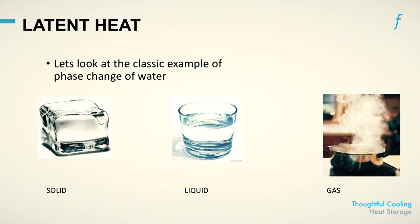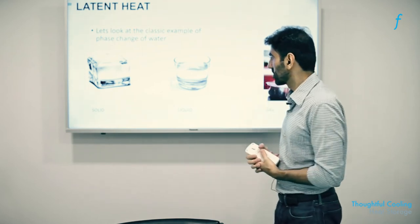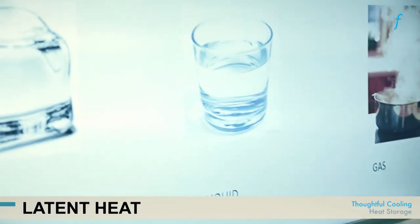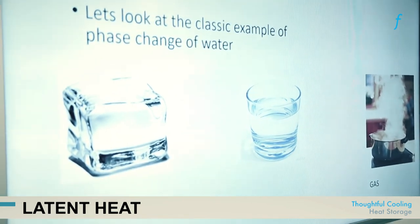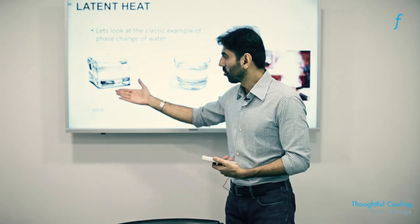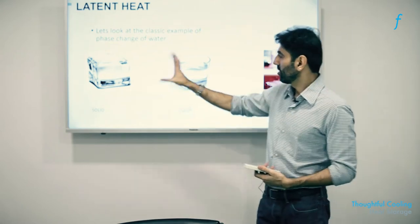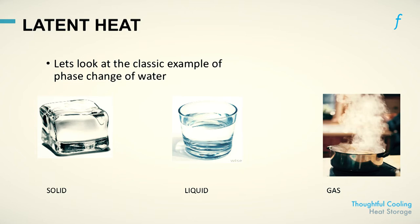Moving to real-life examples of the kinds of heat experienced by buildings and occupants: a material commonly encountered is water in different forms. Water directly influences the energy consumption of our cooling systems. Let's look at the latent and sensible heat quantities across water's different states in the next slide.